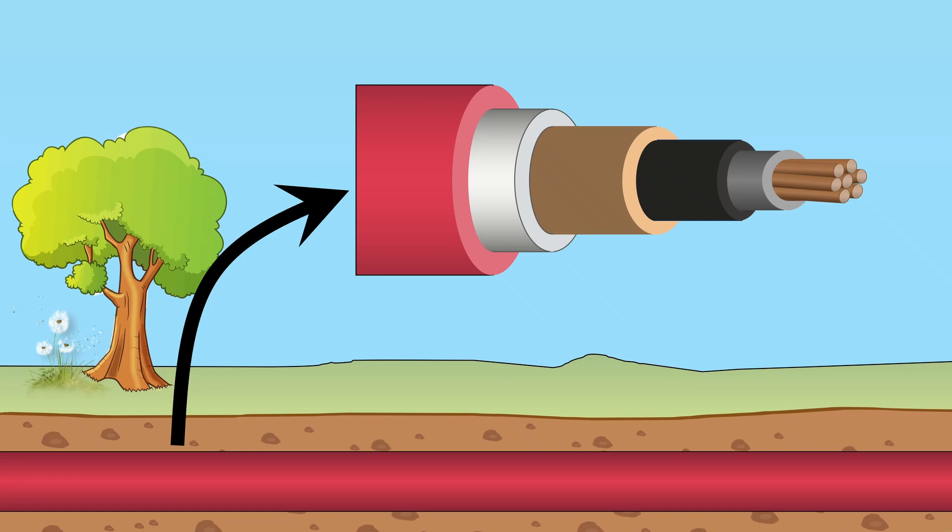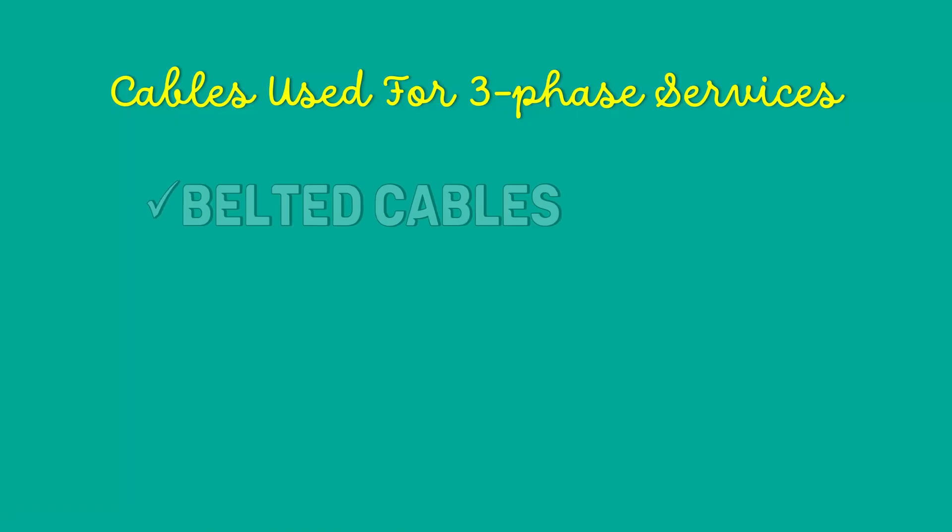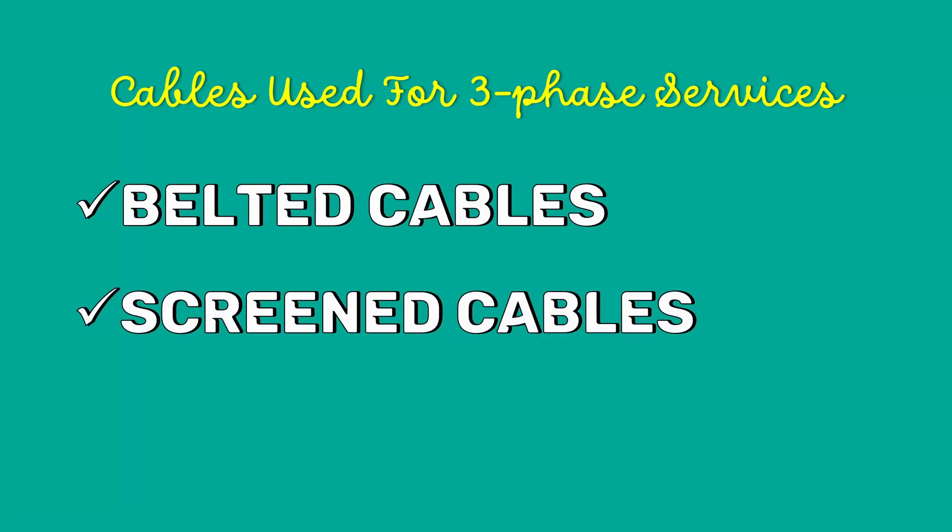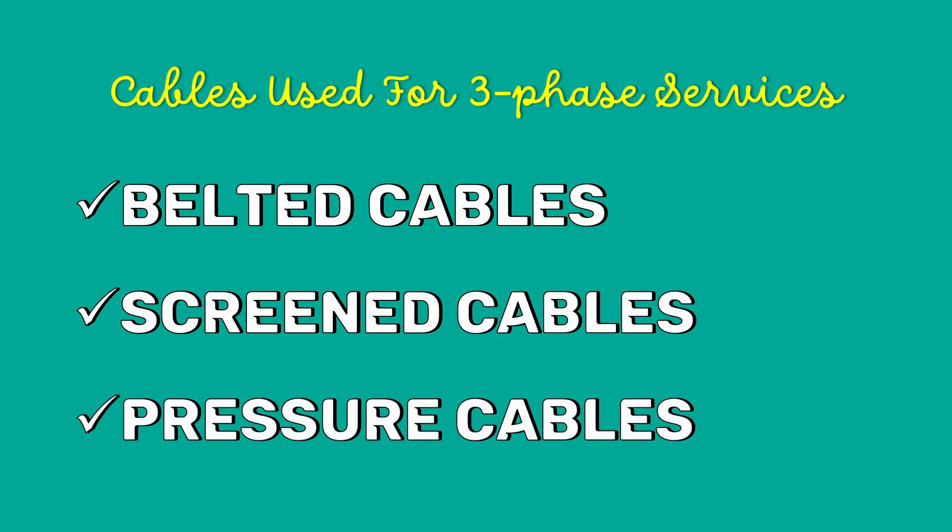In my previous video, I talked about the construction of underground power cables. But not all cables are built in the exact same manner — they all will have minor differences according to the voltages they are expected to withstand. There are three types of cables that are generally used in three-phase services: belted cables, screened cables, and pressure cables. In today's video, we are going to specially concentrate on belted cables.